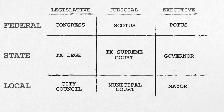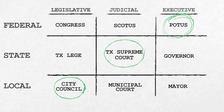So, for example, you could visit lawmakers at the local level — that would be your city council — you could go to your state supreme court, and you could call your federal executive, who would be the president of the United States.